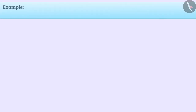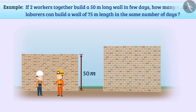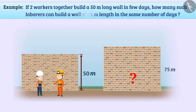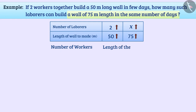Let's see the next example. If two workers together build a 50 meter long wall in a few days, how many laborers can build a wall of 75 meter length in the same number of days? When the number of laborers is 2, the wall length is 50 meters. We have to find the number of laborers so that a wall of 75 meter length can be made in the same number of days. Work will also increase in the same ratio as the number of laborers increases. In this way, the number of workers and the length of the wall are in direct proportion.